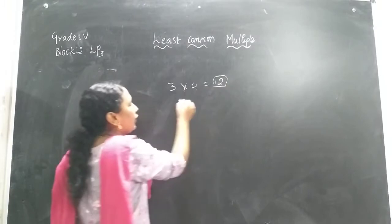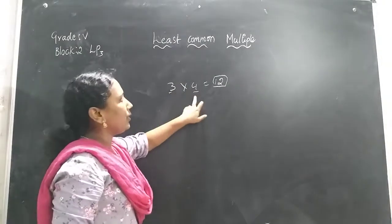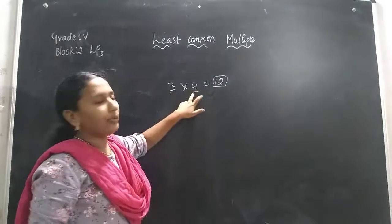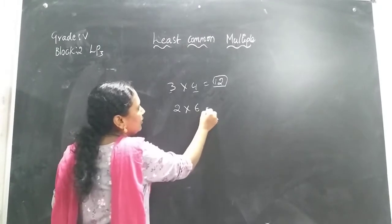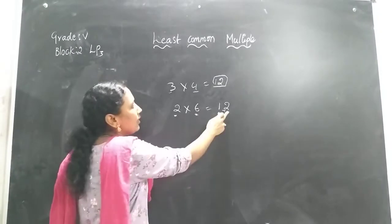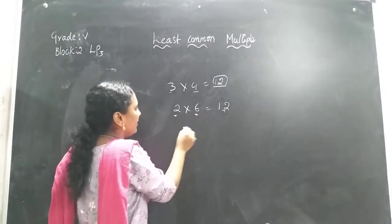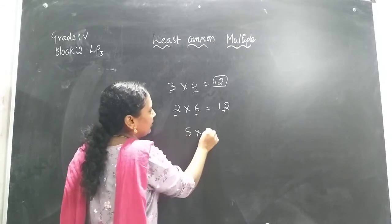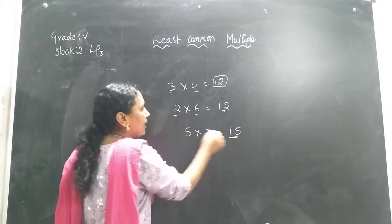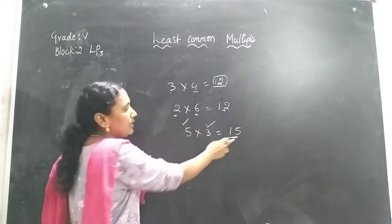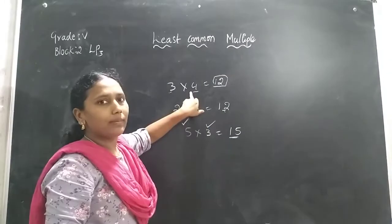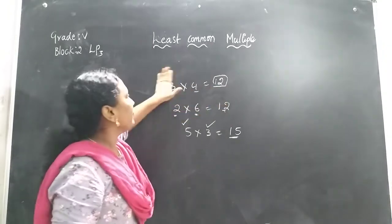12 is the multiple of 3 and 4. If you multiply any two numbers, we are going to get a number, and that number is the multiple of those two numbers. For another example, 2 into 6 is equal to 12, so 12 is the multiple of 2 and 6. Similarly, 5 into 3 is 15, so 15 is the multiple of 5 and 3. The product of any two numbers is the multiple of those numbers.